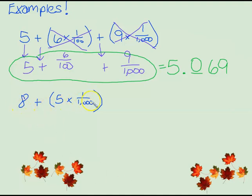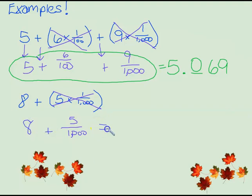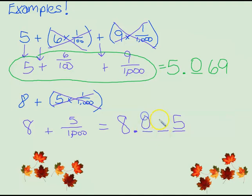How about this one? We have eight plus (five times a thousandth). Five times a thousandth gives me five thousandths. I'm done with the parentheses — the only thing left is eight plus. Eight is a whole number and we have thousandths, so we need a decimal. The thousandths place is: tenths, hundredths, thousandths — so the five goes there. We need zero placeholders in the tenths and hundredths places. Eight and five thousandths.